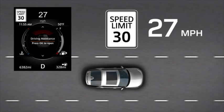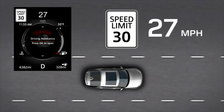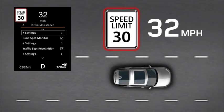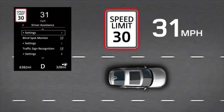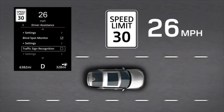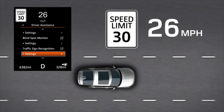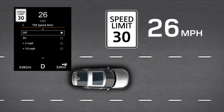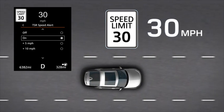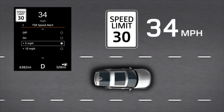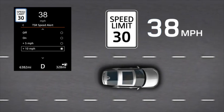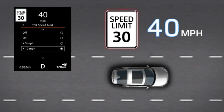Speed alert: when the vehicle's speed is greater than or equal to the detected speed limit, a flashing red ring around the displayed speed limit sign will appear in the message centre. Speed alert can be switched on or off, or adjusted in the vehicle's setup menu on the instrument panel, with three settings: when the vehicle's speed equals the detected speed limit, when it is 5 miles per hour above, or when it is 10 miles per hour above the detected speed limit.